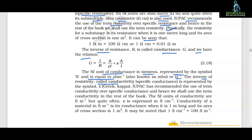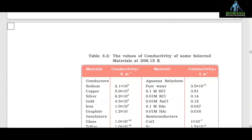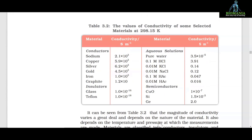The inverse of resistivity is called conductivity (specific conductance), represented by the symbol κ (kappa). IUPAC has recommended the use of the term conductivity over specific conductance. The SI units of conductivity are S/m, but quite often κ is expressed in S/cm. Conductivity of a material in S/m is its conductance when it is 1 meter long and its area of cross section is 1 m². Note that 1 S/cm = 100 S/m. Table 3.2 gives values of conductivities of some selected materials at 298.15 K.